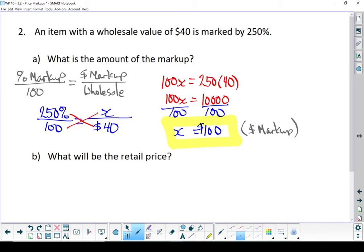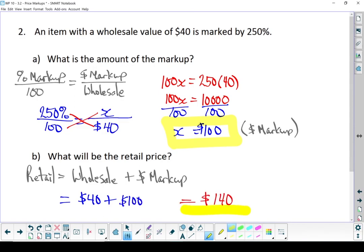So a common mistake I find is especially when you've got a really high markup like this one. 250% is a high markup. People look at that number and think, well, that's higher than the wholesale value, that must be the retail price. No. That's their profit. The retail price, you still have to add that original $40 in. Let's put in our numbers. $40 wholesale price with a $100 markup gives me a retail price of $140. That is what the customer pays.